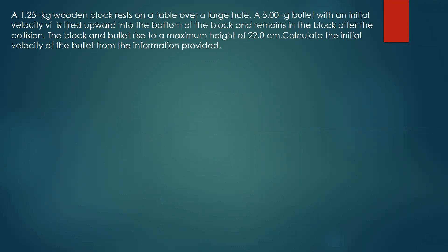A 1.2 kg wooden block rests on a table over a large hole. A 5-gram bullet with an initial velocity vi is fired upwards into the bottom of the block and remains in the block after the collision. The block and bullet rise to a maximum height of 22 centimeters. Calculate the initial velocity of the bullet.